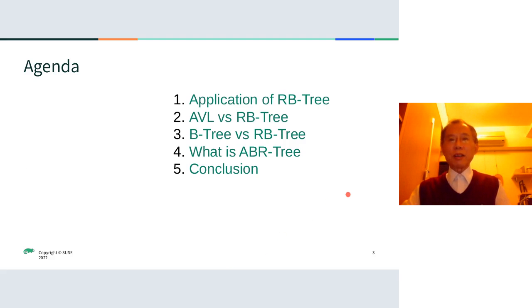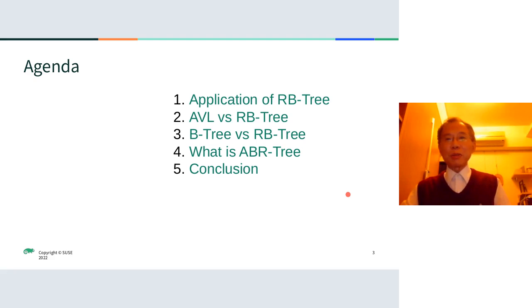This is my agenda. First, I will introduce the red-black tree application because the red-black tree is popular. Then I will compare the red-black tree with the ABR tree and the B-tree. The reason I want to do the comparison is because my ABR tree is consistent of some features of those three kinds of data structures. And then I will introduce what the ABR tree algorithm is. And finally, I will have a conclusion.